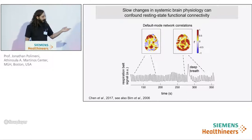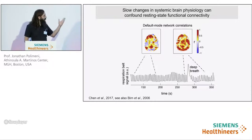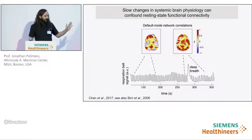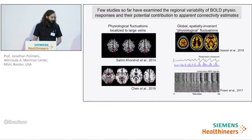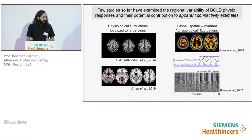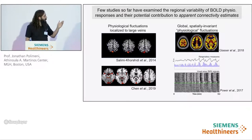Recent work from Kitty Zhang's group nicely demonstrated that when connectivity within the default mode is estimated from a period of regular breathing, the connectivity pattern strongly resembles the default mode network. However, when the same connectivity is estimated from a period including even a single deep breath, the connectivity pattern is substantially altered. Often these physiological components are identified through their spatial patterns, though few studies have examined the regional variability of BOLD physiology.